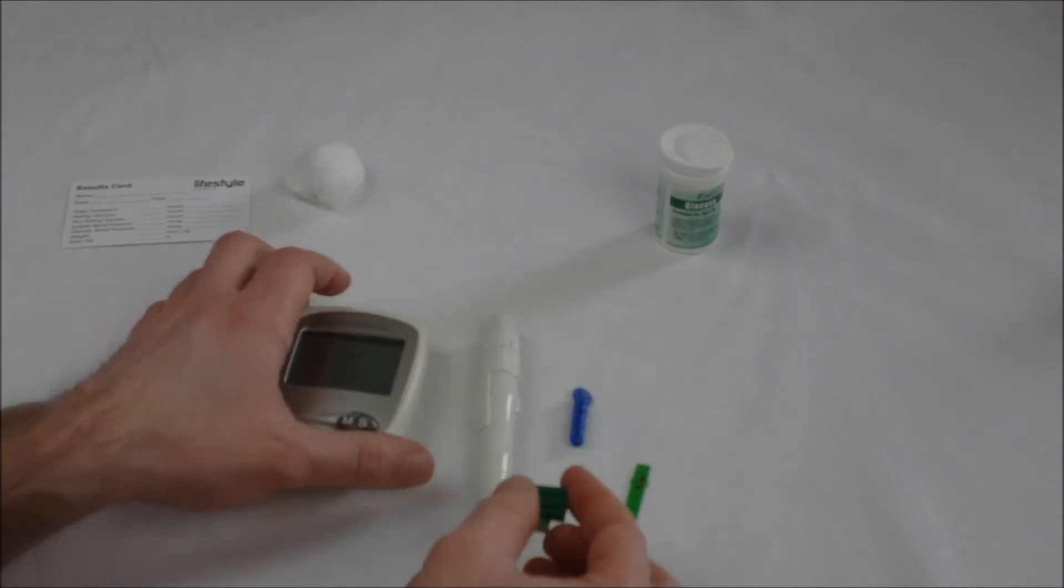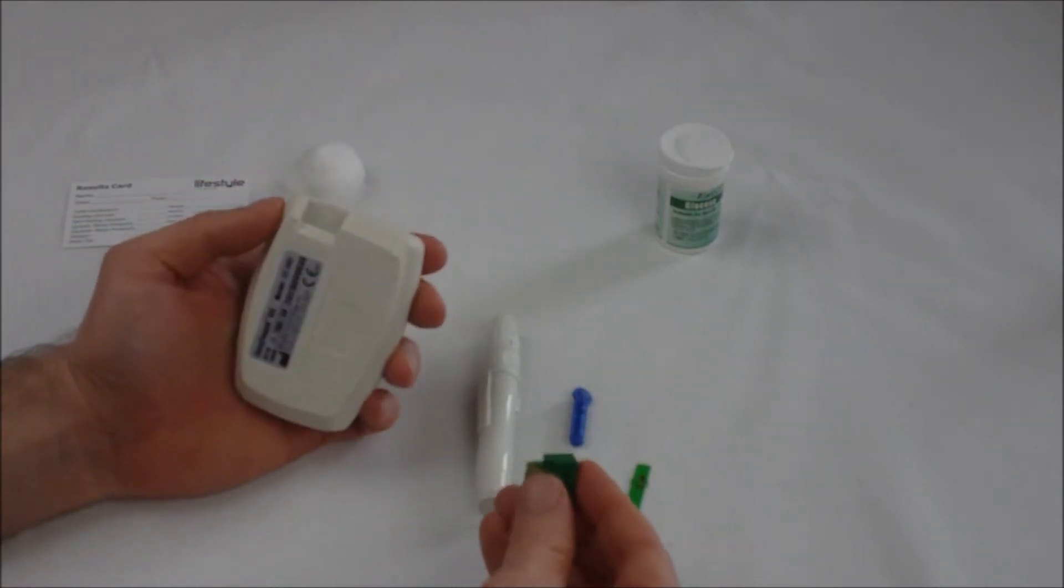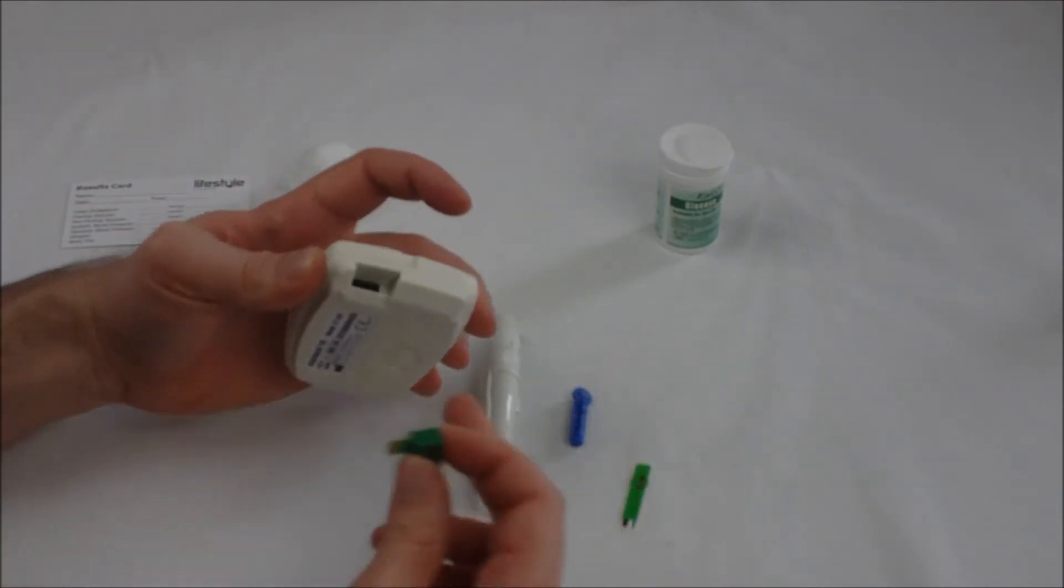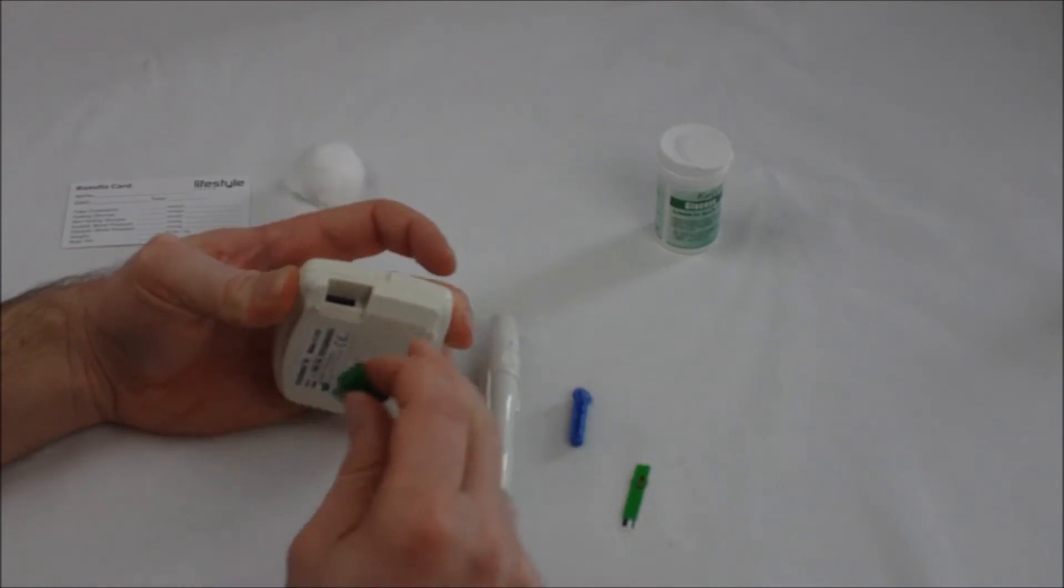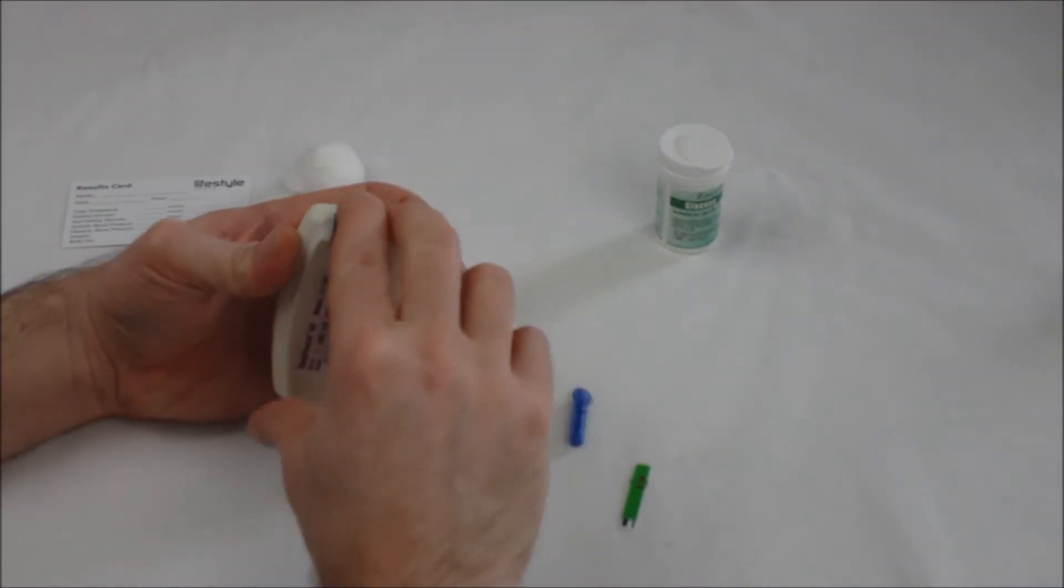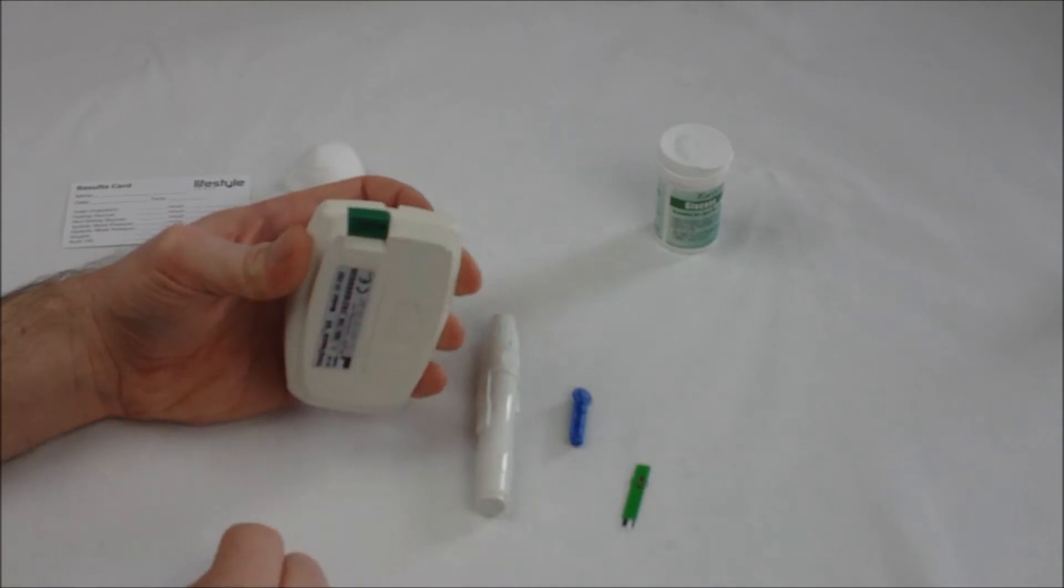This code key tells the monitor which test strips you're using, which batch. The code key goes into the slot at the back of the monitor and it will only fit in one orientation. You just want to be quite firm and slot it into position.